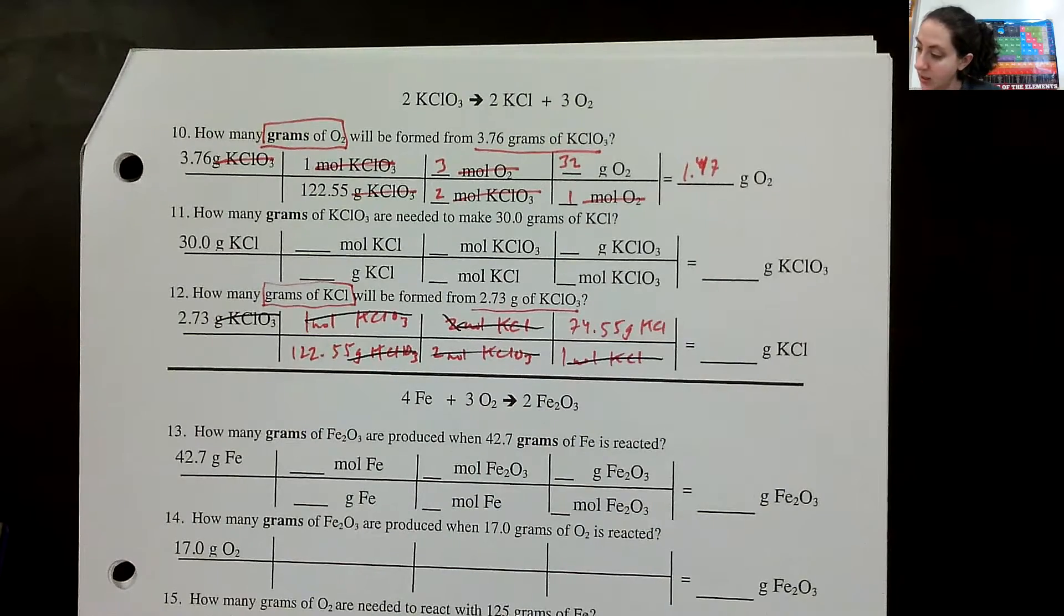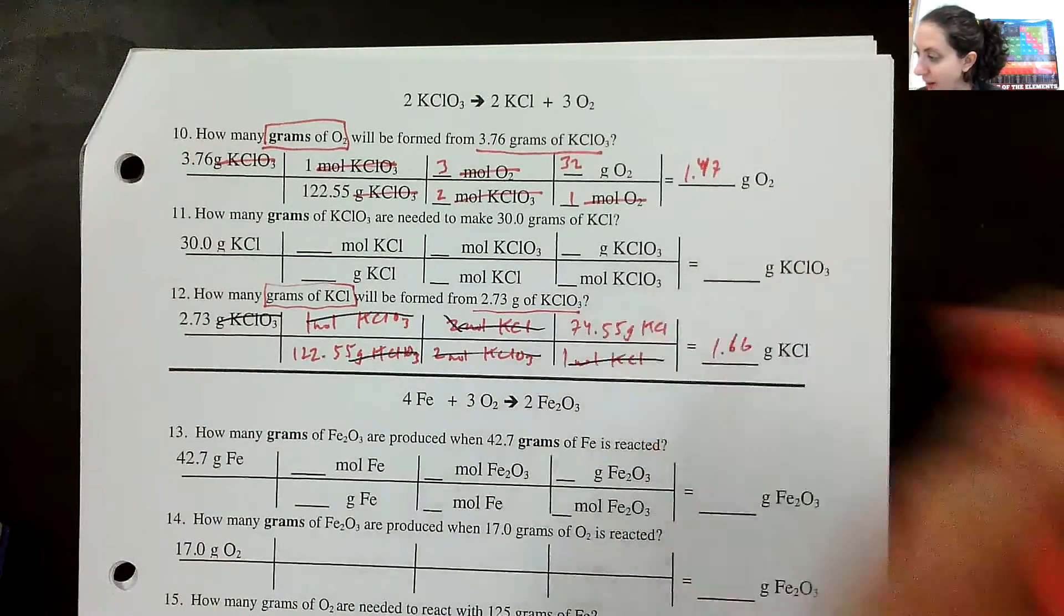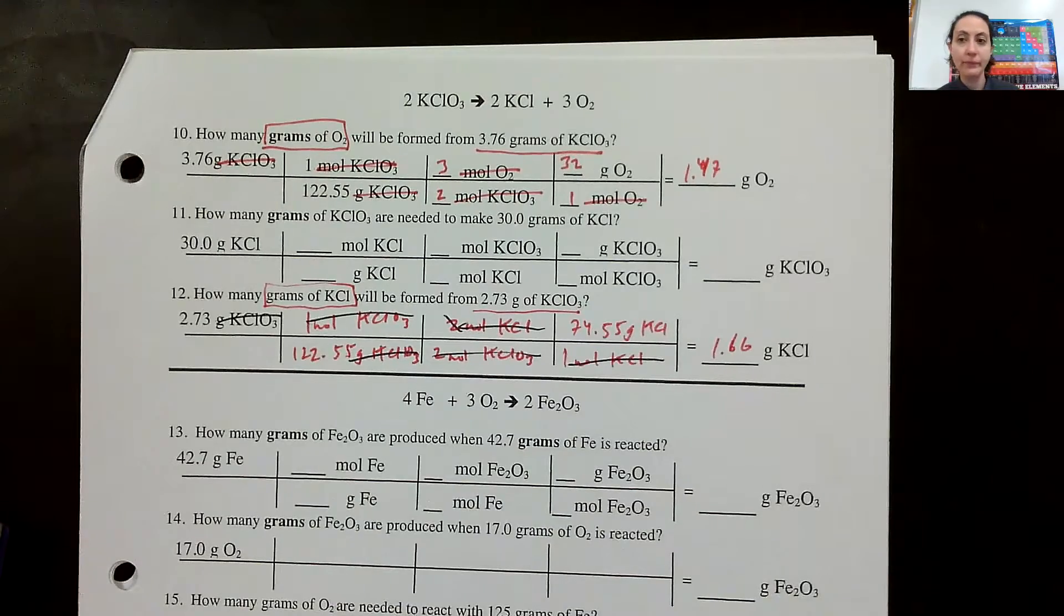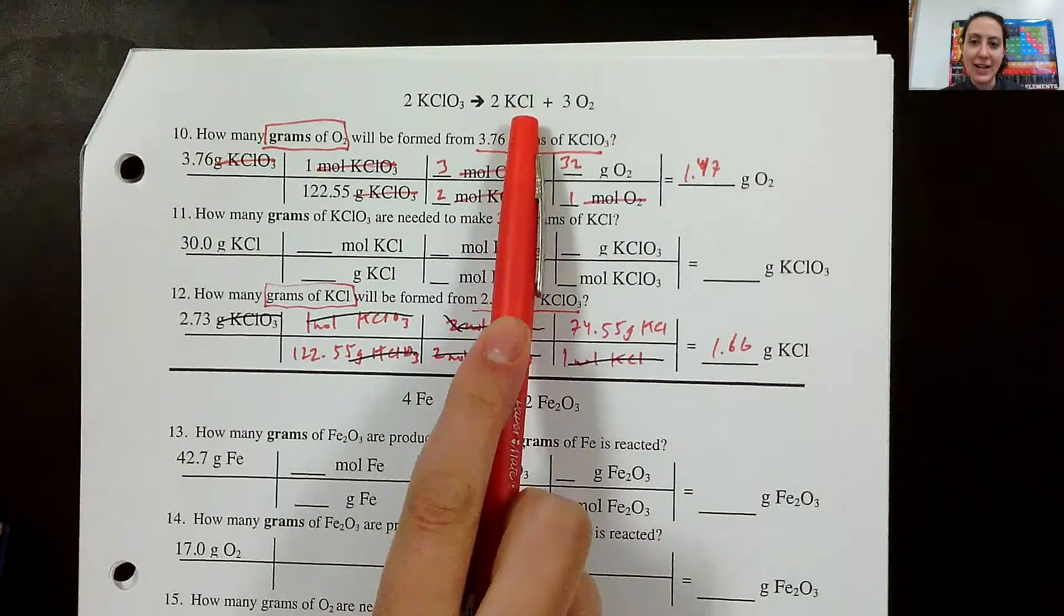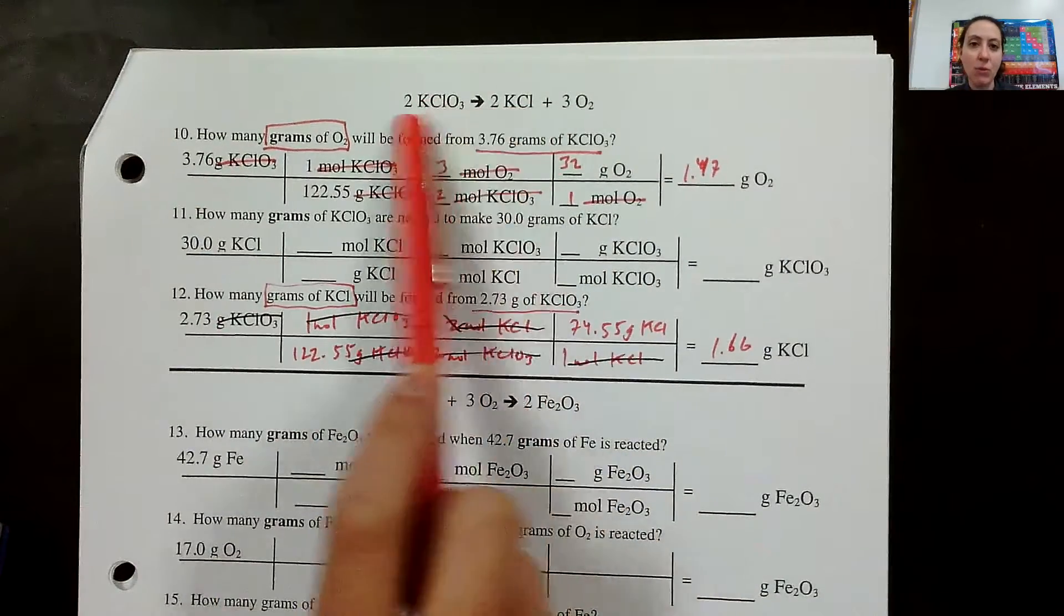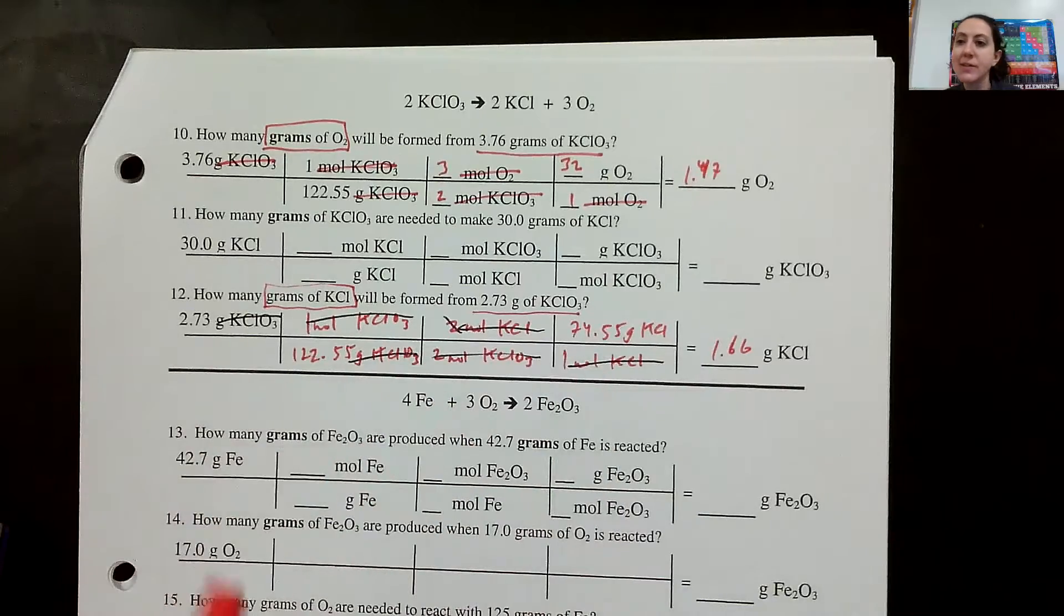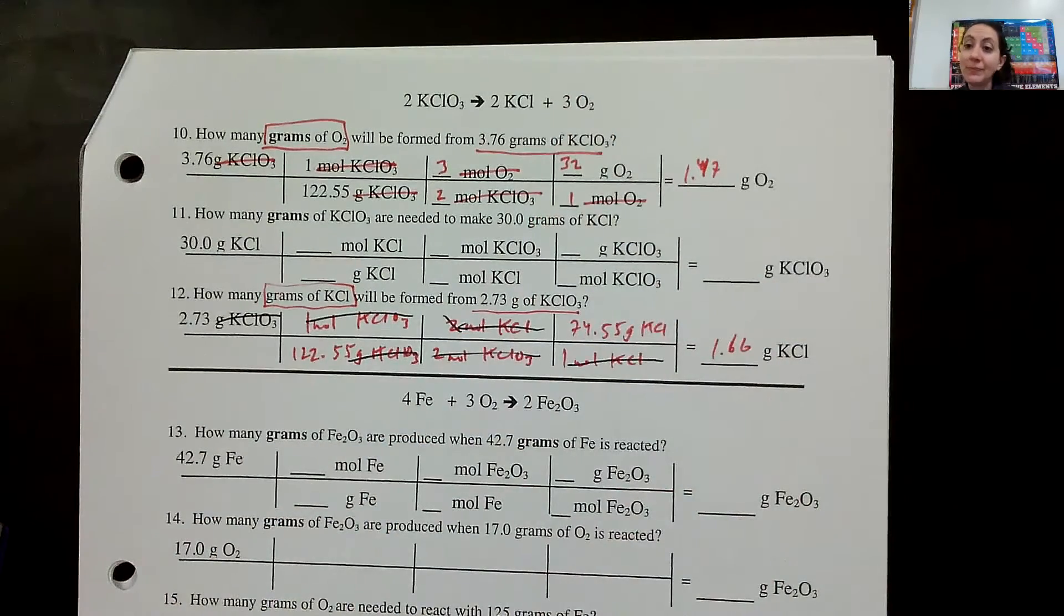I'm just going to run this through my calculator real quick. 2.73 divided by 122.55 times 74.55. And it looks like 1.66 grams of potassium chloride is the answer. Also totally reasonable. It makes sense that however many grams of potassium chlorate we'd start off with, there should be less grams of potassium chloride, being that they're in the same molar ratio, and it would have lost some mass to whatever oxygen was released.